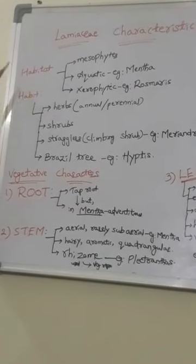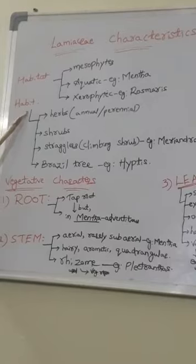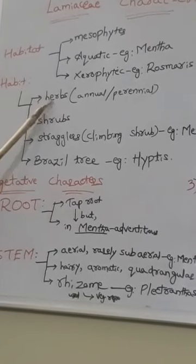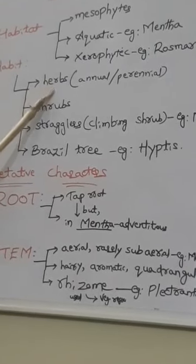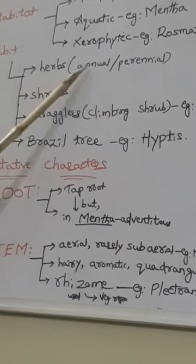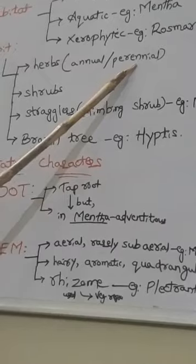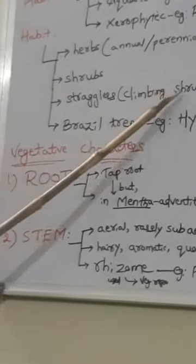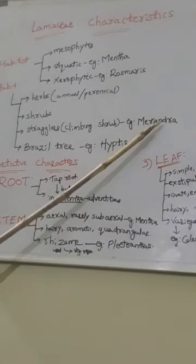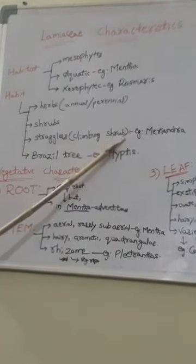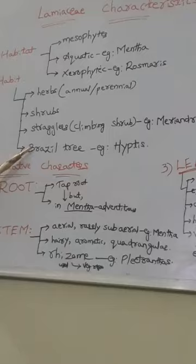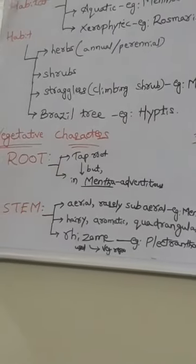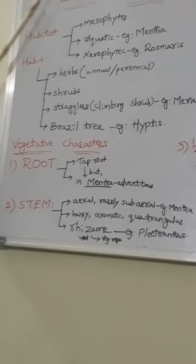Regarding habit, these plants are either herbs, shrubs, or trees. Most of the plants are smooth to touch and are called herbs — either annual or perennial herbs. One and only plant grown as a climbing shrub is Meriandra. A plant grown as a tree is Hyptis.